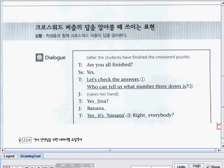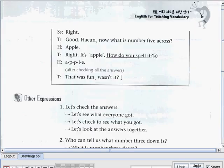Okay, now let us continue on to the next page. Okay, we have here the students answered, Right. And then teacher again. Good. Heyyun, now what is number 5 across? And then Heyyun said, Apple. Teacher, right. It's apple. How do you spell it? And then Heyyun said, A, P, P, L, and then E.